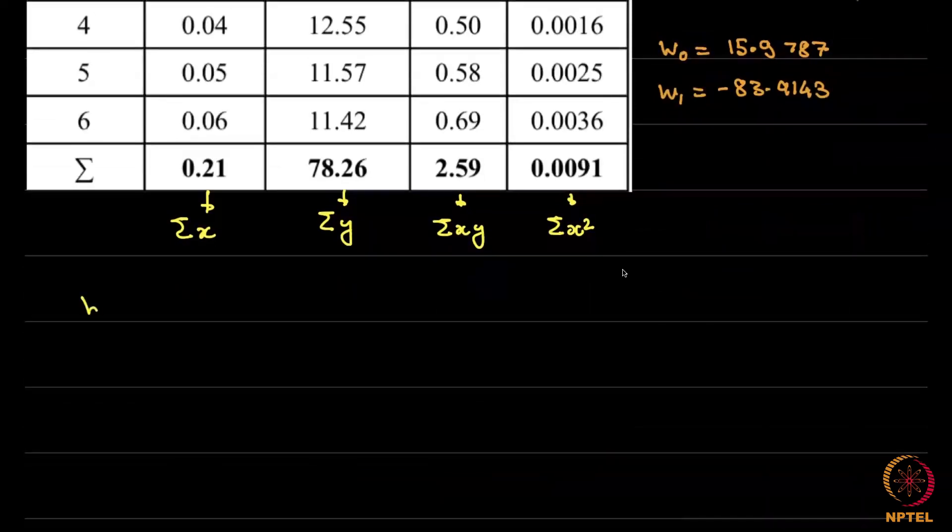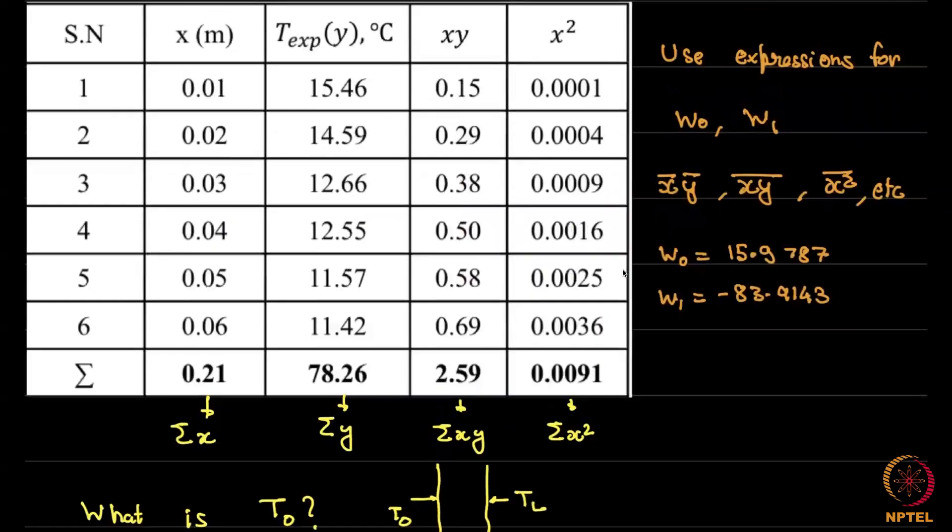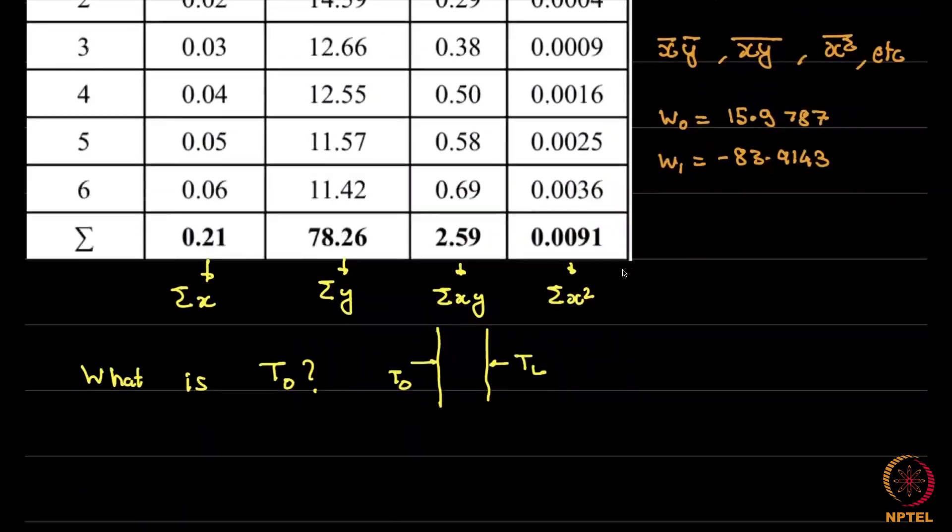Suppose I ask the question, what is T0? That is the temperature on the left boundary. Now notice, as far as the measurements are concerned, we do not have that value. We only have thermocouple values in the middle of the slab 0.01 up till 0.06. We do not have the value at the left or the value at the right. However, this is at the location x equal to 0.